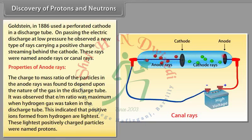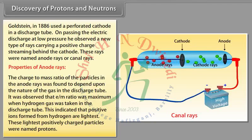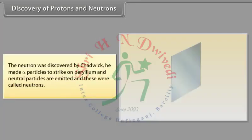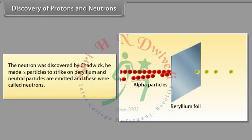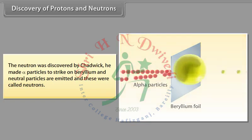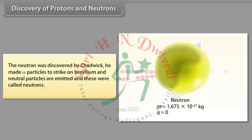It was observed that the e/m ratio was maximum when hydrogen gas was taken in the discharge tube, indicating that the positive ions formed from hydrogen are the lightest. These lightest positively charged particles were named protons. The neutron was discovered by Chadwick, who made alpha particles strike beryllium, and neutral particles were emitted — these were called neutrons.